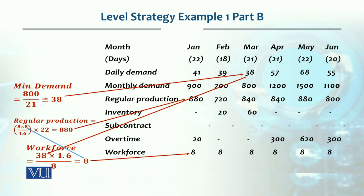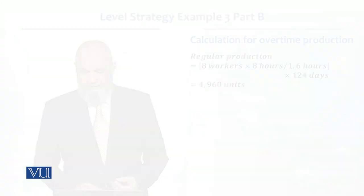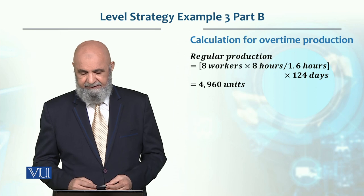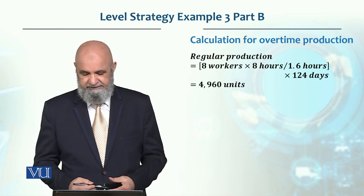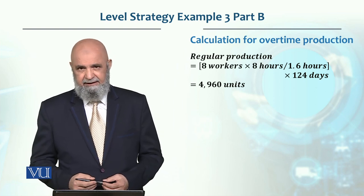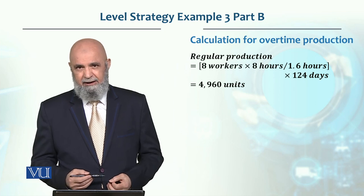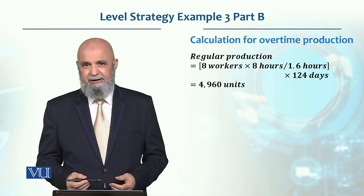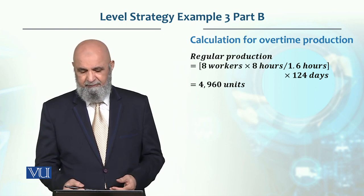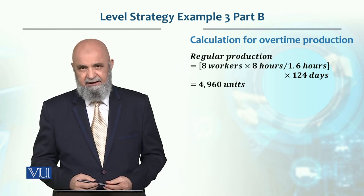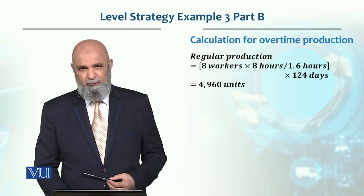Overtime is utilized in January, April, May, and June. The number of units produced in overtime are noted in our calculations. Using the shortcut method, as explained in the subcontracting case: 8 workers × 8 hours per worker per day ÷ 1.6 = 40 units per day. With 124 total working days, total in-house regular production is 4,960 units across the entire planning horizon.